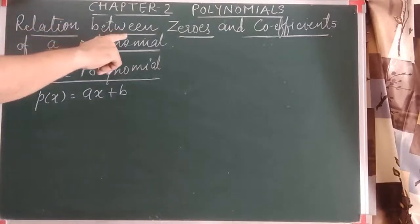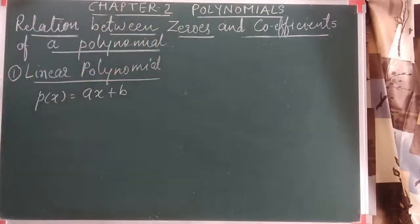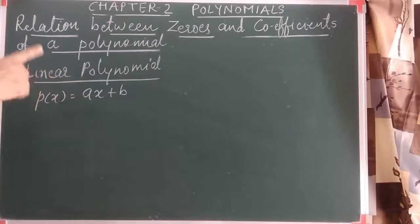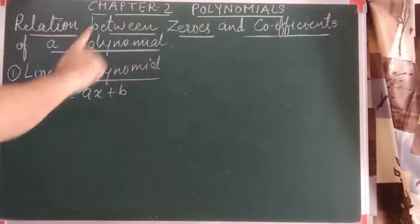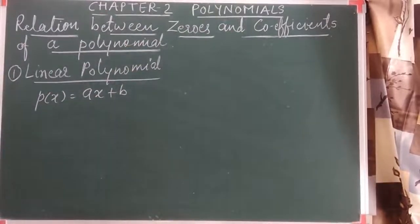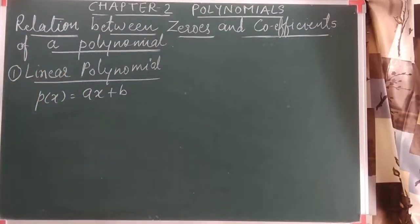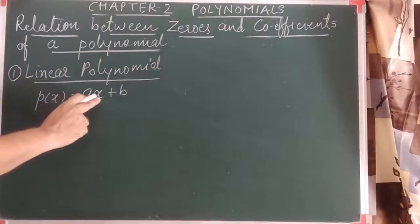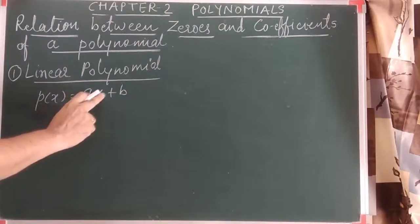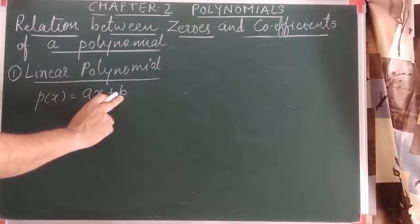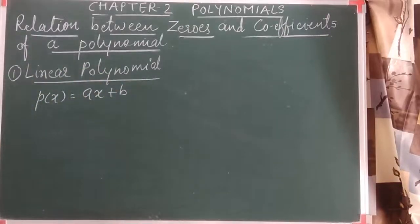The topic is the relation between zeros and coefficients. Zeros are the values of x which satisfy the equation — that means when we substitute those values into the equation we obtain zero. Coefficients are the constant values in product with the variable. Here, 'a' is the coefficient of x, and 'b' is a coefficient of x raised to zero, i.e., a constant term.